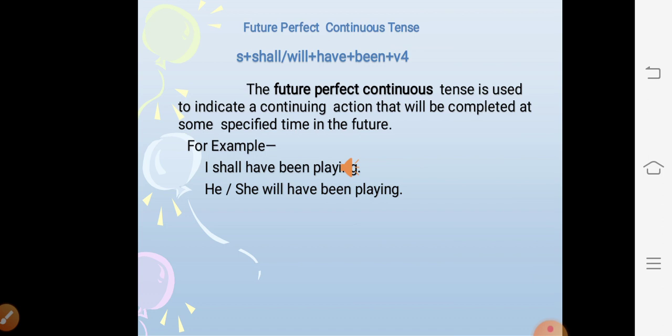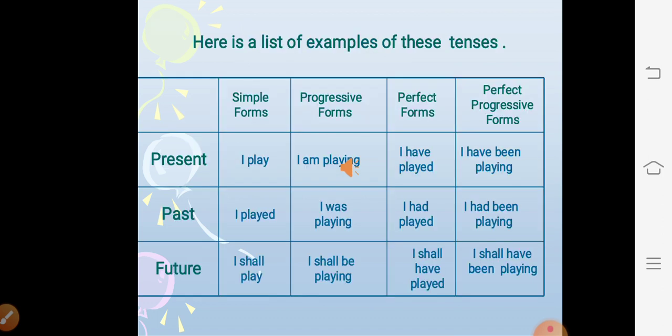Future perfect continuous tense. The structure is subject + shall/will + have + been + V1 + ing. The future perfect continuous tense is used to indicate a continuing action that will be completed at some specified time in the future. For example: I shall have been playing, he or she will have been playing. Here is a list of examples of these tenses — you must go through it attentively. Thank you.